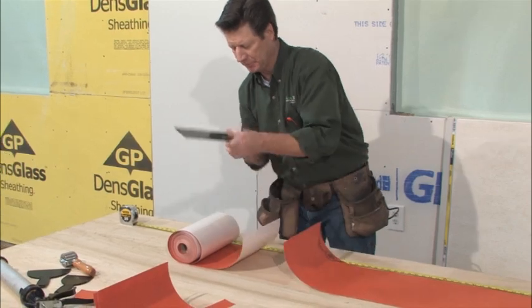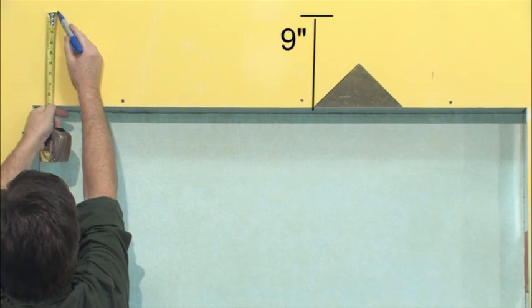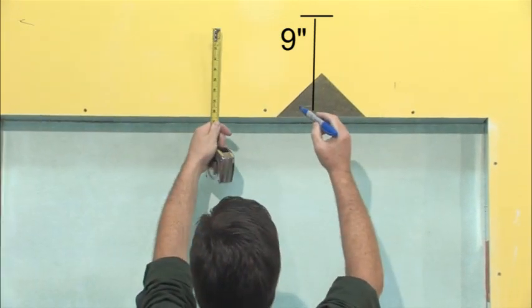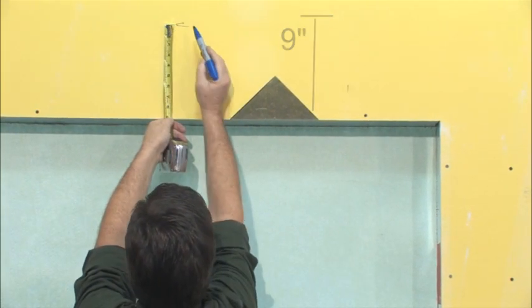Measure and cut VaporShield SA for the sill, left and right jams, and head flashing, so that each piece extends 9 inches past the edges of the opening for each side. That is the rough opening plus 18 inches.